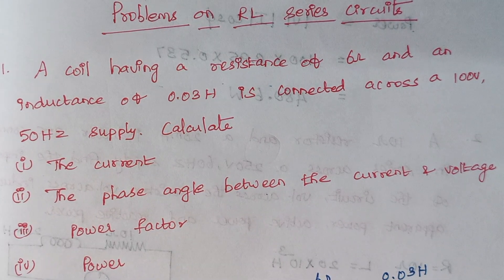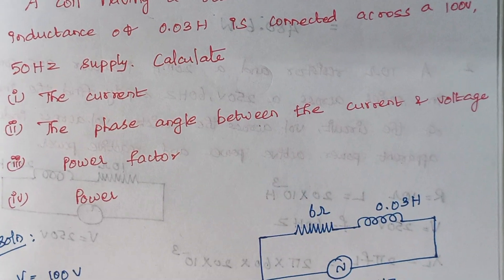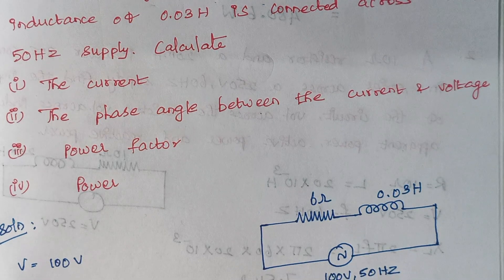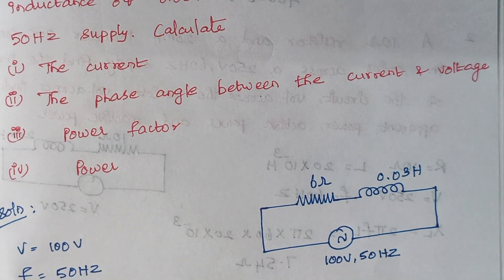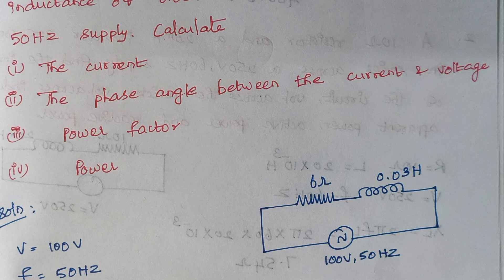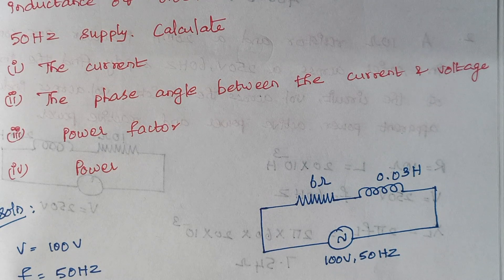So first we are going to draw the diagram. Here we are having a resistor and inductor together and they are connected to a 100 volt 50 hertz supply. So the first thing is we need to calculate the value of current.